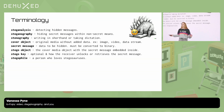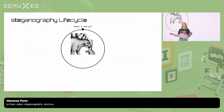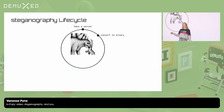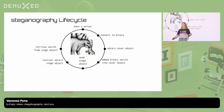A stegophile is someone who loves stegosauruses. I lied again — it's actually a person who enjoys climbing up the outside of buildings. Now let's review the life cycle. We start with the secret, convert it to binary, obtain a cover object, embed the secret into the cover object, send the stego object, the receiver obtains the stego object, the receiver retrieves the secret. Profit, probably.